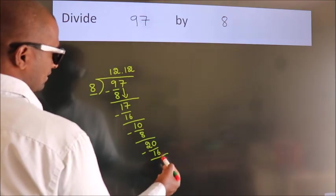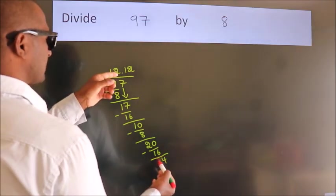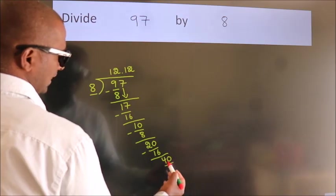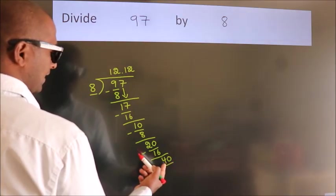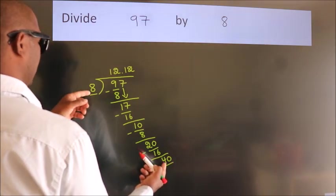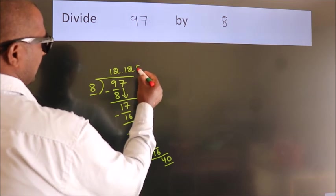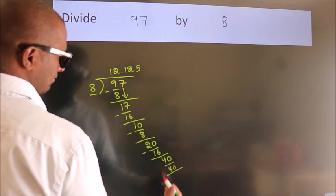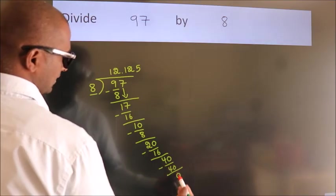After this, we already have the decimal, so directly take 0. So, 40. When do we get 40? In the 8 table, 8 times 5 is 40. Now, we subtract. We get 0.